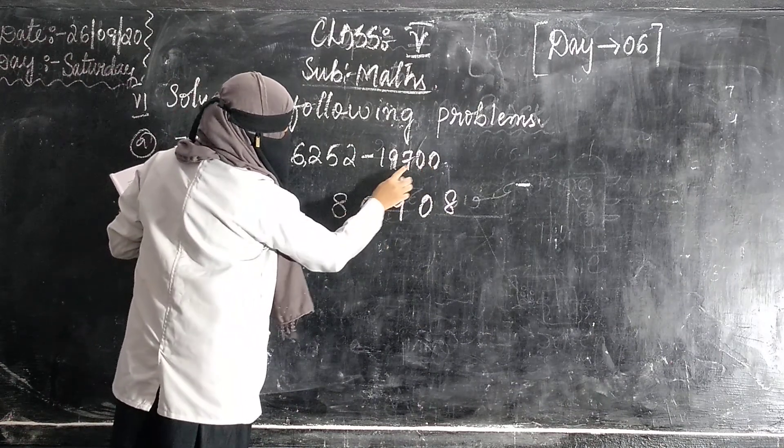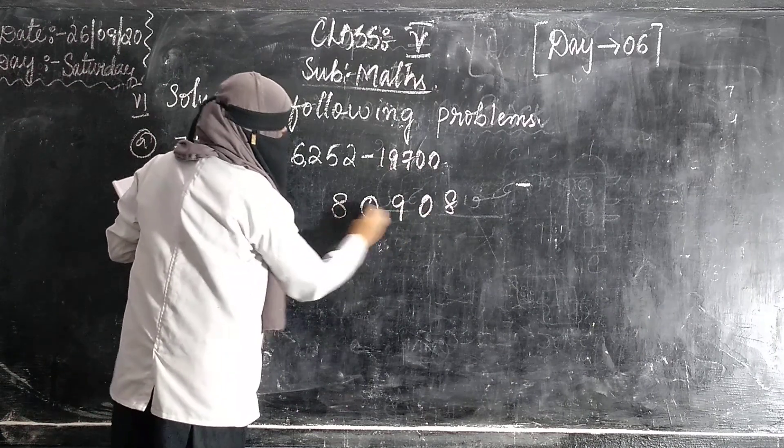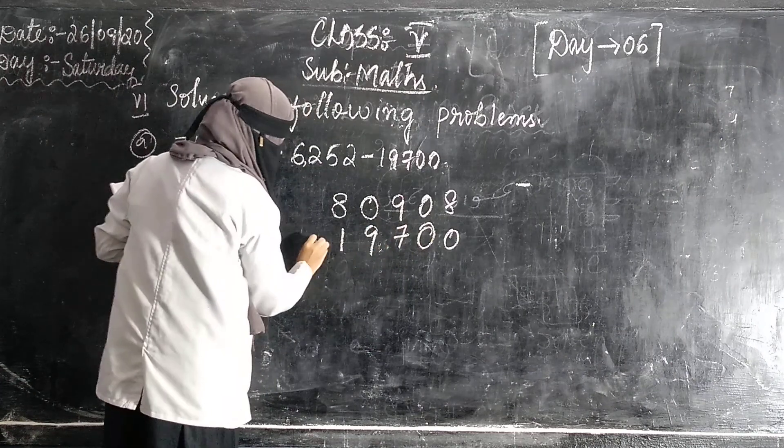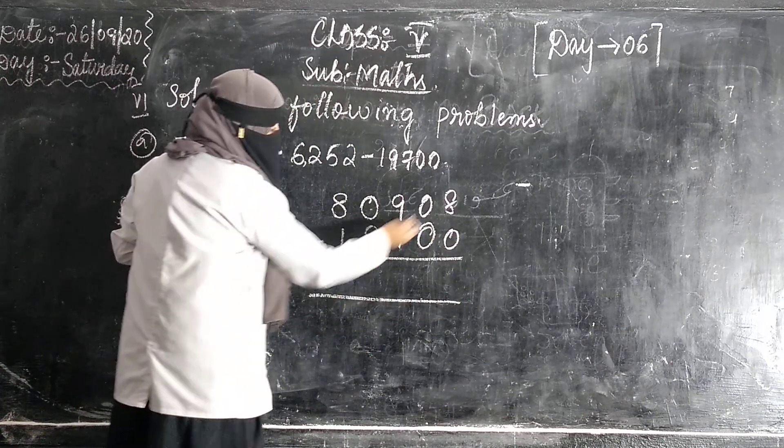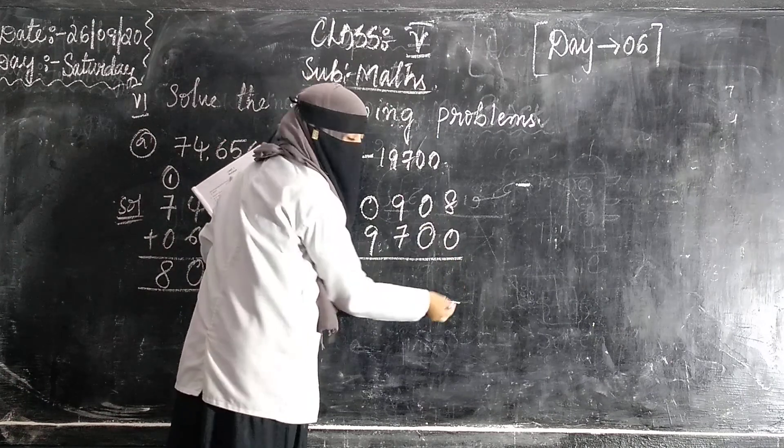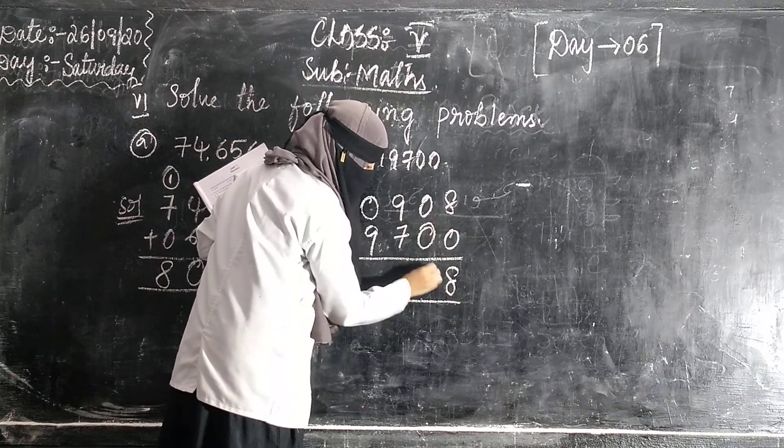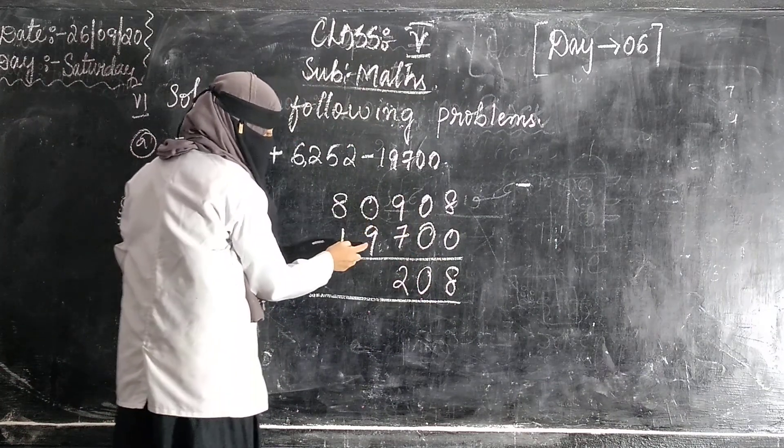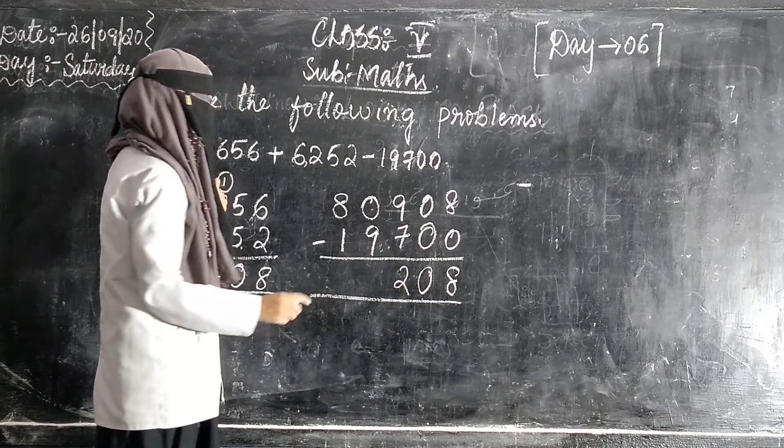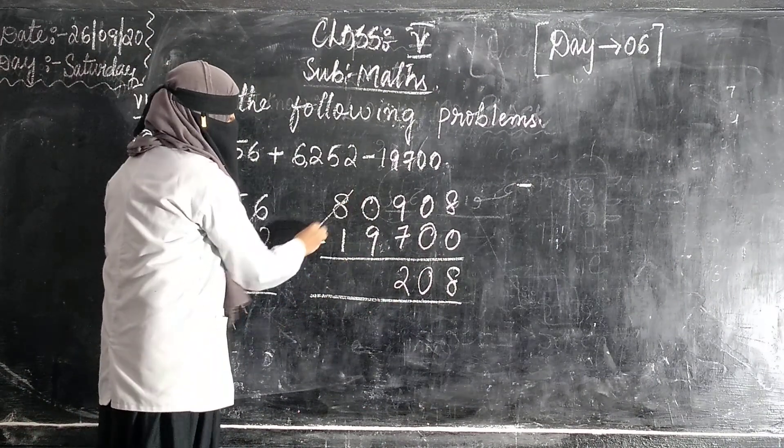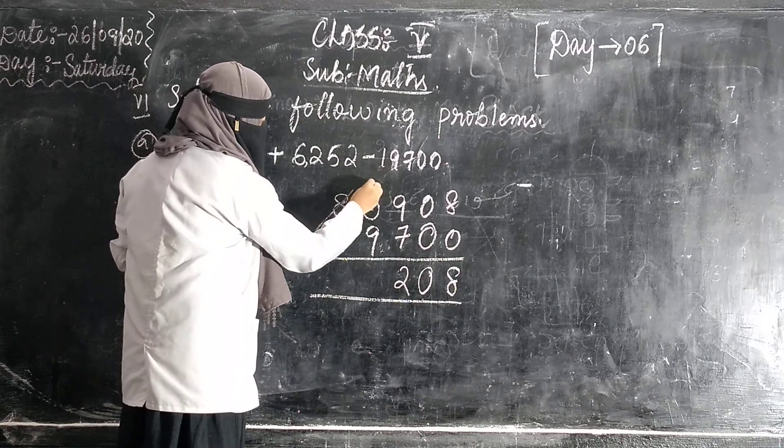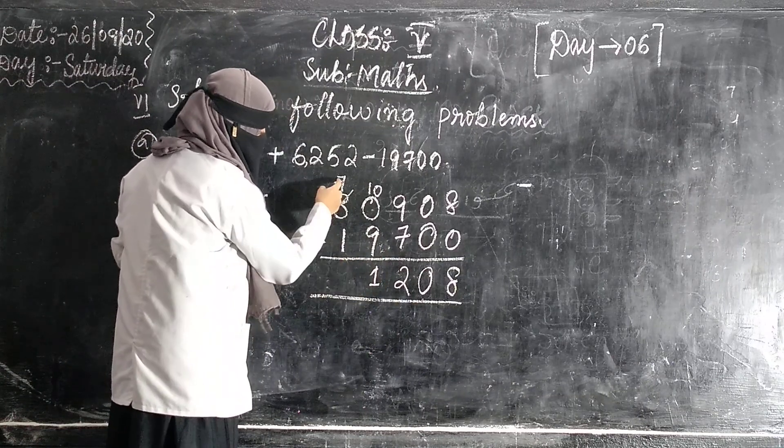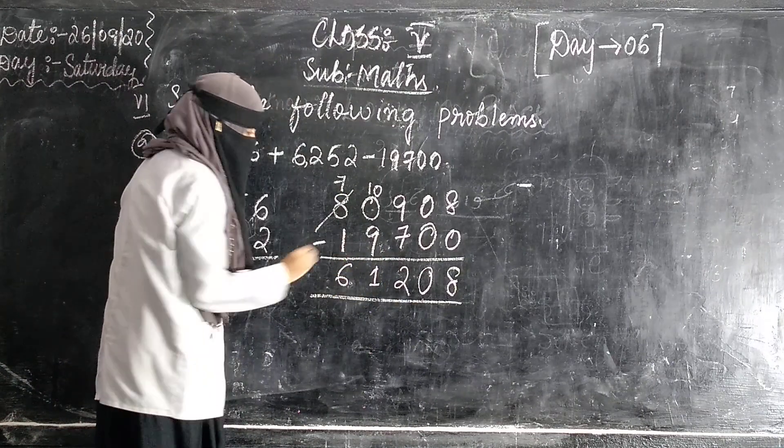Now 80,908. Next, 19,400. 8 minus 0, the answer is 8. 0, 0. 9 minus 7, 2. 0 minus 9. 0 me se aapko 9 minus karna hai, so we will take the borrow. 10 minus 9, 1. 7 minus 1, 6. Writing your classwork.